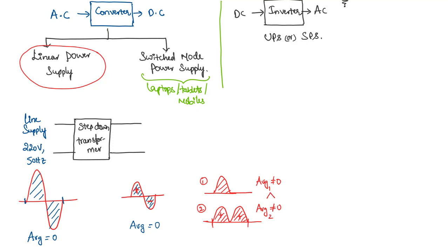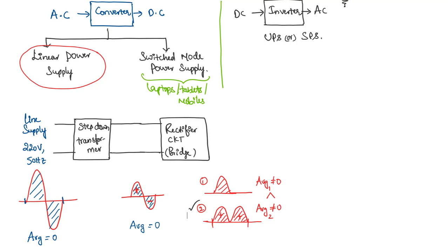This kind of rectification can be done using a rectifier after the step-down transformer. In general it will be a bridge rectifier, which corresponds to the second case — full-wave rectification — because the average value is higher. So at the line voltage we have the sinusoidal waveform; after stepping down we have the same shape at lower amplitude; and at the output of the bridge rectifier we have the full-wave rectified waveform. We will go into detail on the bridge rectifier in coming videos.